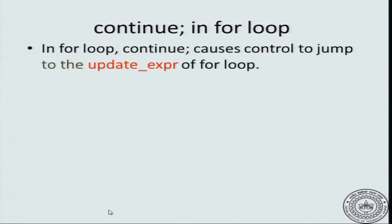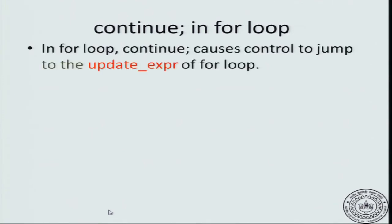What happens to continue in a for loop? Notice that for loop has the following form. You have for, then there is an initialization expression, then there was a test and finally, there was update and then you have the body of the loop.